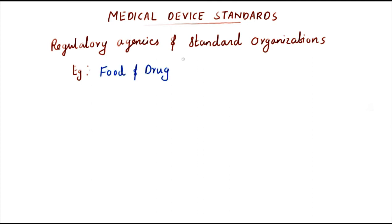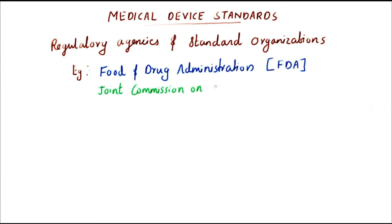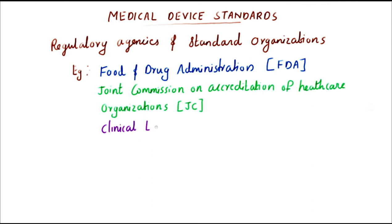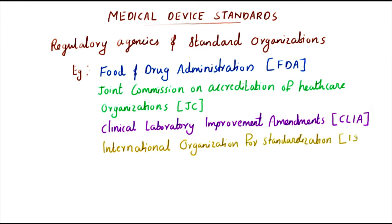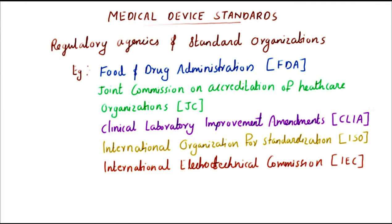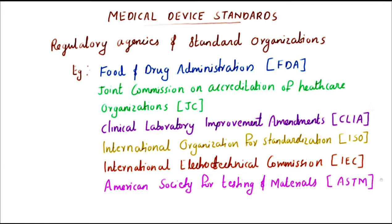Those are: Food and Drug Administration, called FDA; the Joint Commission on Accreditation of Health Care Organizations, JCAHO; the Clinical Laboratory Improvement Amendments, called CLIA; International Organization for Standardization, ISO; International Electro-Technical Commission, IEC; and American Society for Testing and Materials, ASTM.